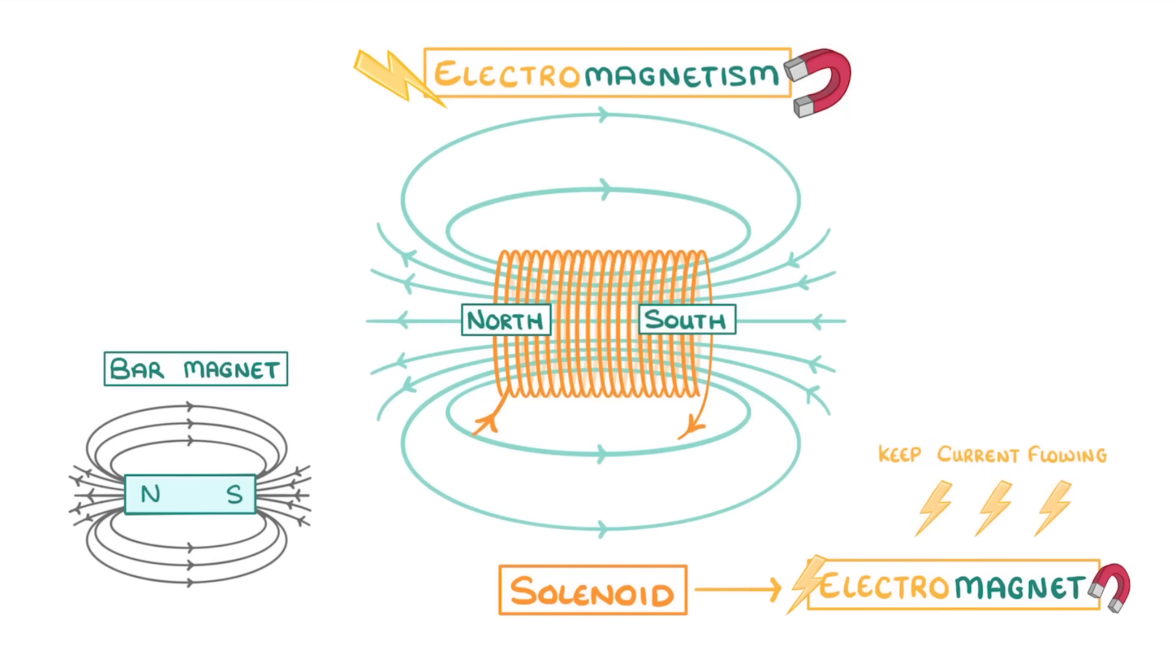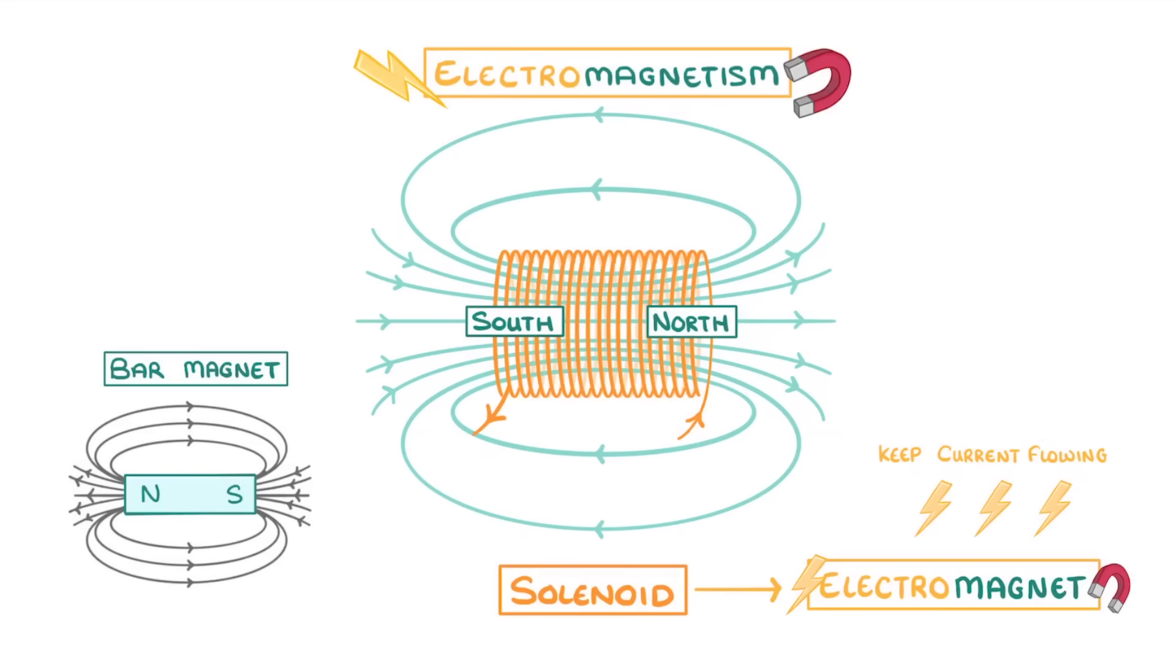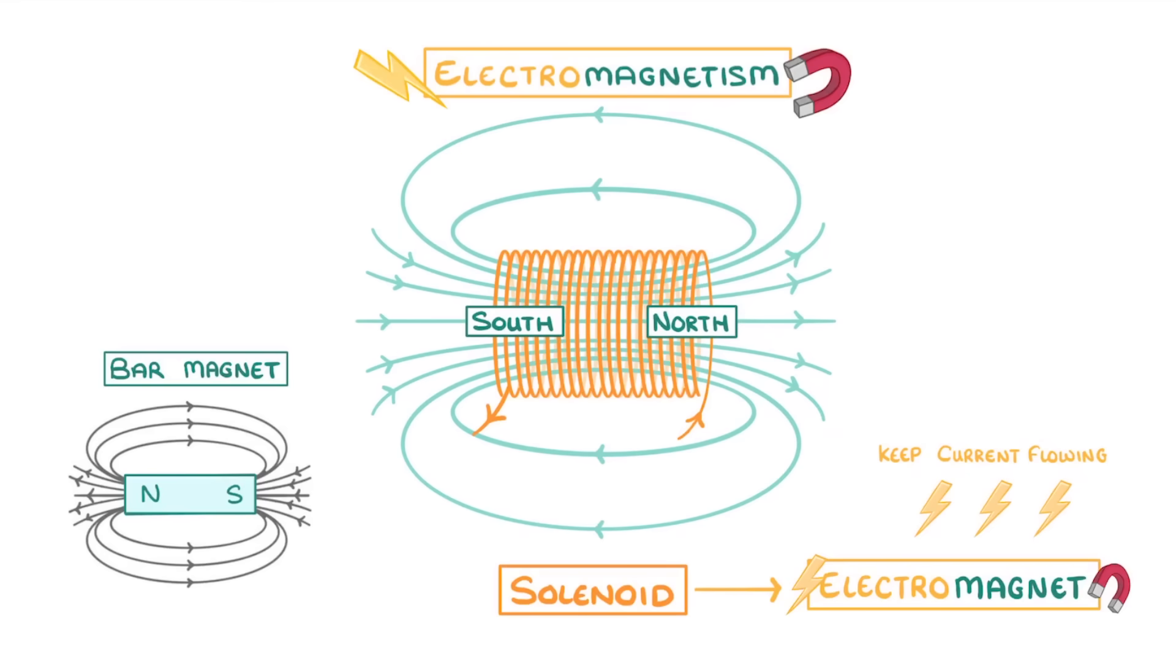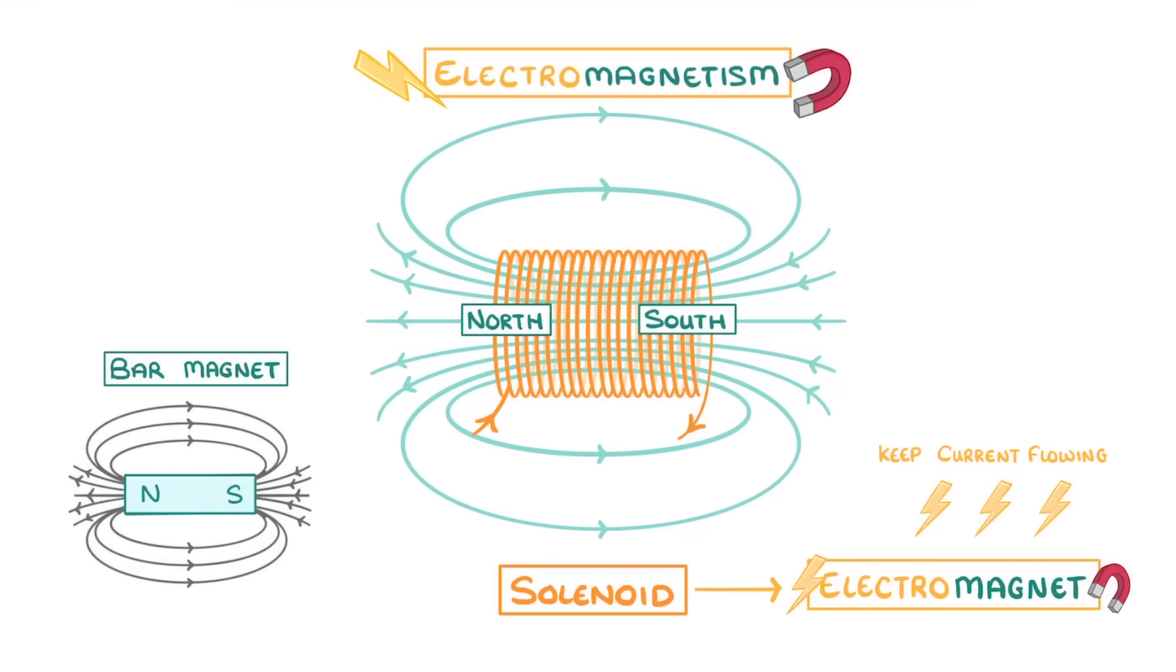As well as being able to turn it on and off, we can also reverse the direction of the magnetic field, by reversing the direction in which our current is flowing. We can show this by reversing the direction of our little current arrows. And each time we flip them, the direction of our field lines and the sides of the poles will also flip around, indicating that our magnetic field has flipped directions.